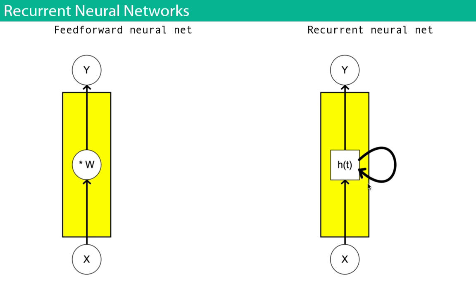Recurrent neural networks can mess with your head a little bit at first. For this short demo, I don't expect everyone to understand exactly how they work — I'll try to convey the gist so people understand at least what they're capable of. Most people have probably already seen these in action, or at least a type called LSTM. If you've seen text prediction or machines that generate text in the style of some author, that's being done by recurrent neural networks.